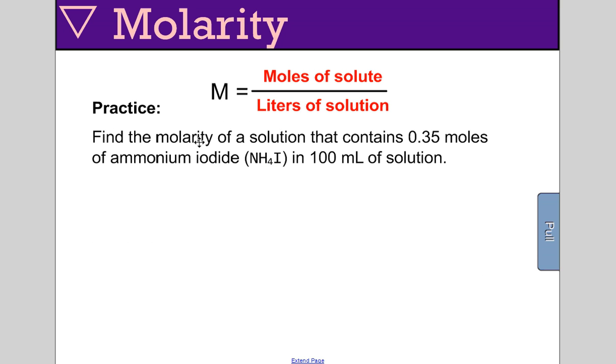First question: find the molarity of a solution that contains 0.35 moles of ammonium iodide in 100 milliliters of solution. The first trick is to make sure that our units are in the proper condition. To convert 100 mils to liters, we'll say 100 mils, and we know there are 1,000 mils per liter, so that's 0.1 liters. Alternatively, you could have simply moved the decimal three places to the left.